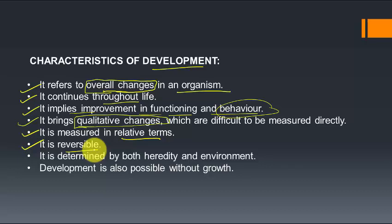Development is reversible. For example, a socially well-developed, extrovert person who likes to party and make friends may, after a tragic life event, become emotionally broken and withdraw from social interactions — sitting alone and avoiding people. That person, once extrovert, has now become introvert. So social development has reversed, showing that development can be reversible.